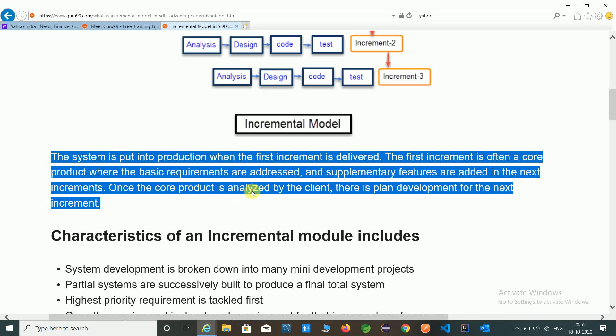The first increment is obtained by the core product where the basic requirements are addressed and supplementary features are added in the next increment. Once the core product is analyzed by the client, there is a planned development for the next increment. That is, in that incremental model, we design one model and deliver to production and pass to the client. If client accepts this model, then we can change or use for deployment.